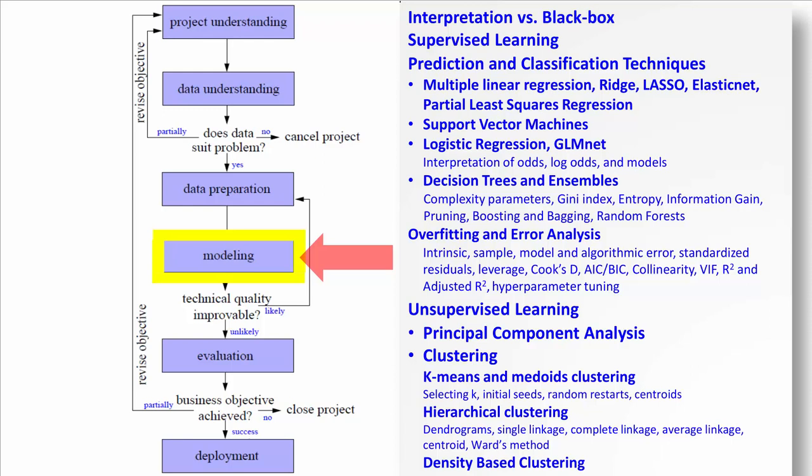We talked about decision trees and ensembles of decision trees, including the idea of complexity parameters, impurity measures such as Gini and entropy, information gain, information gain ratio, pruning and growing trees. We looked at ensembles of those trees, including bagging, boosting, and random forests.